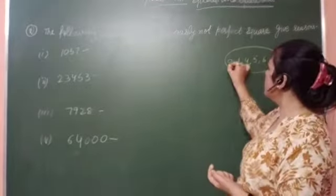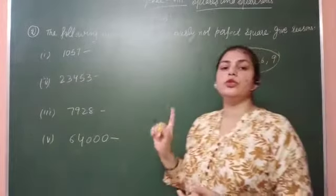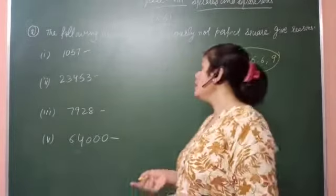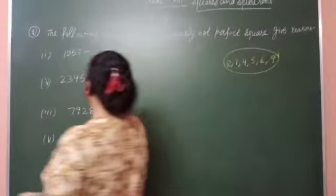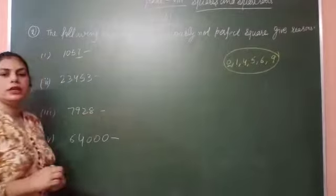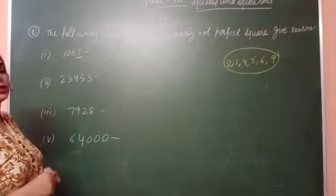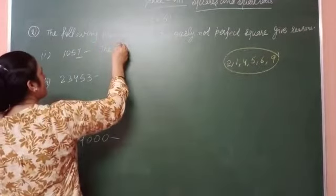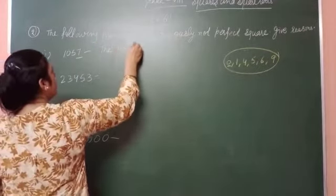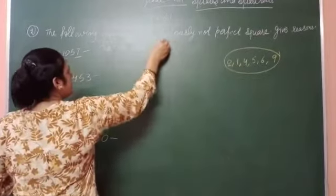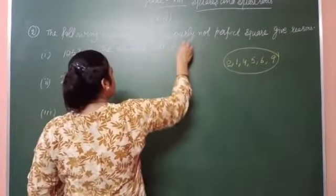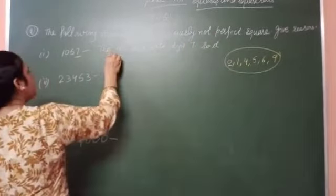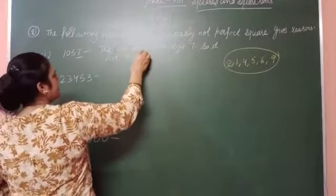Clear? And if 0 comes at the end, then the zeros should appear an even number of times — they should come in pairs. So here the digit ends with 7. This number ends with 7. So it is not a perfect square number. The number ends with digit 7, so it is not a perfect square number. Clear?